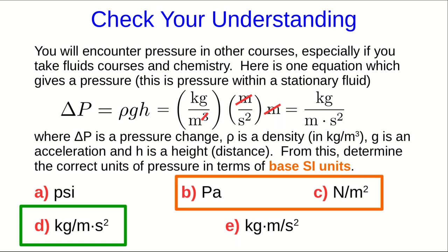Now, note that B and C are both correct SI units for pressure, but they're not in base units. And A, PSI, is correct units for pressure, but it's not SI.